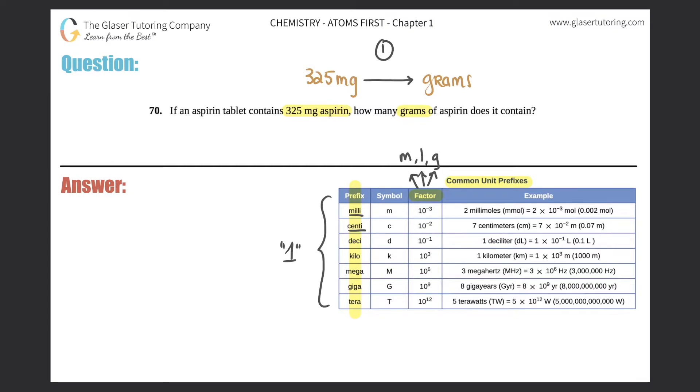So know the difference between seeing a prefix in the front—lowercase m is milli—and now they're just asking you for the base unit, which is just grams. So I'll just say BU for base unit. You could always do a one-step conversion between any prefix back to a base unit using the handy-dandy common unit prefixes.